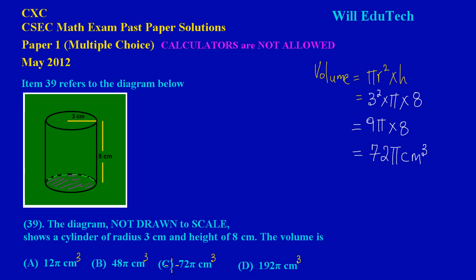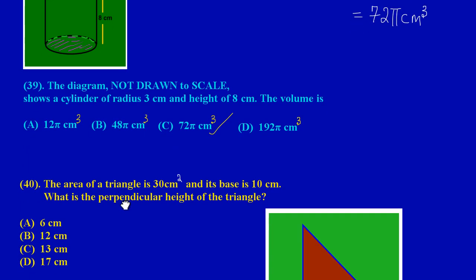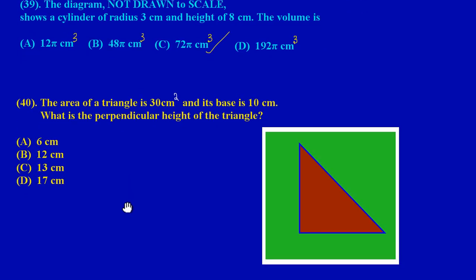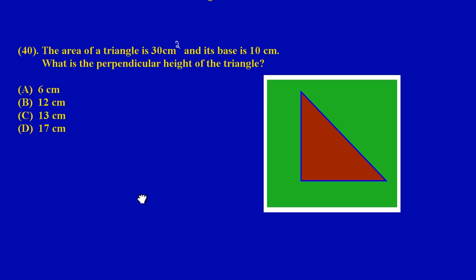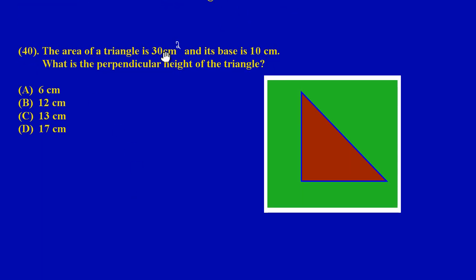Now let's move on to question 40. Let's just pull this up a bit. In question 40, my friends, here we have: the area of a triangle is 30 cm² and its base is 10 cm. What is the perpendicular height of the triangle?